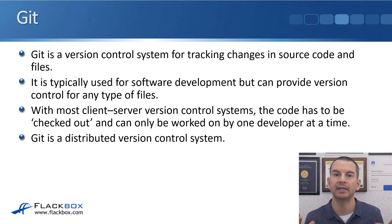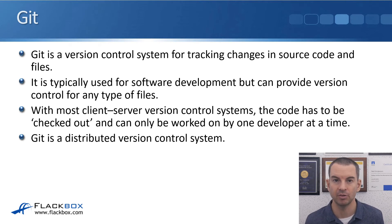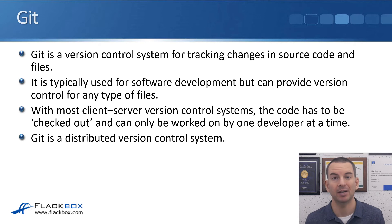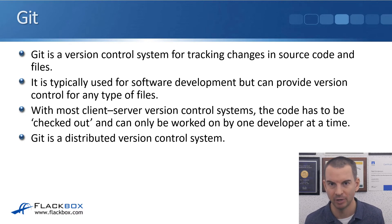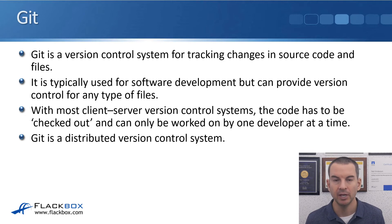Next is Git. Git is a version control system which tracks changes in source code and files. It's typically used for software development, but it can also provide version control for any type of files. Other version control systems do exist, but Git is by far the most popular one today. With a client-server version control system, the code has to be checked out and can only be worked on by one developer at a time.